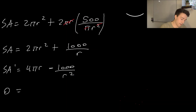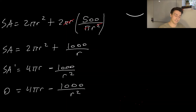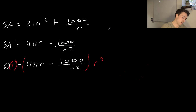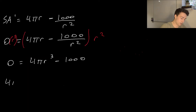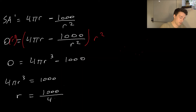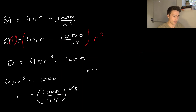Setting the derivative to zero: 0 equals 4 pi r minus 1,000 over r squared. Multiplying both sides by r squared gives 0 equals 4 pi r cubed minus 1,000. Solving for r: 4 pi r cubed equals 1,000, so r equals (1,000 divided by 4 pi) to the power of one-third. We get r equals 4.30 centimeters.